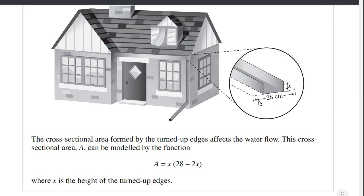So basically what they're telling us here is we have 28 centimeters of aluminum to work with, and from the 28 centimeters we have to fold up an edge of height x to create a cross section that's x amount high and 28 minus 2x amount wide.